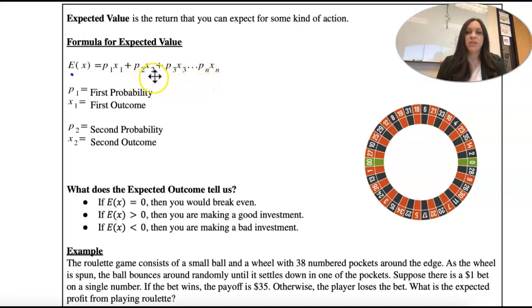So if you have two events, you're going to have the probability and the outcome. If you have three, probability, outcome, and it can go on forever. But most of ours are just going to have two.